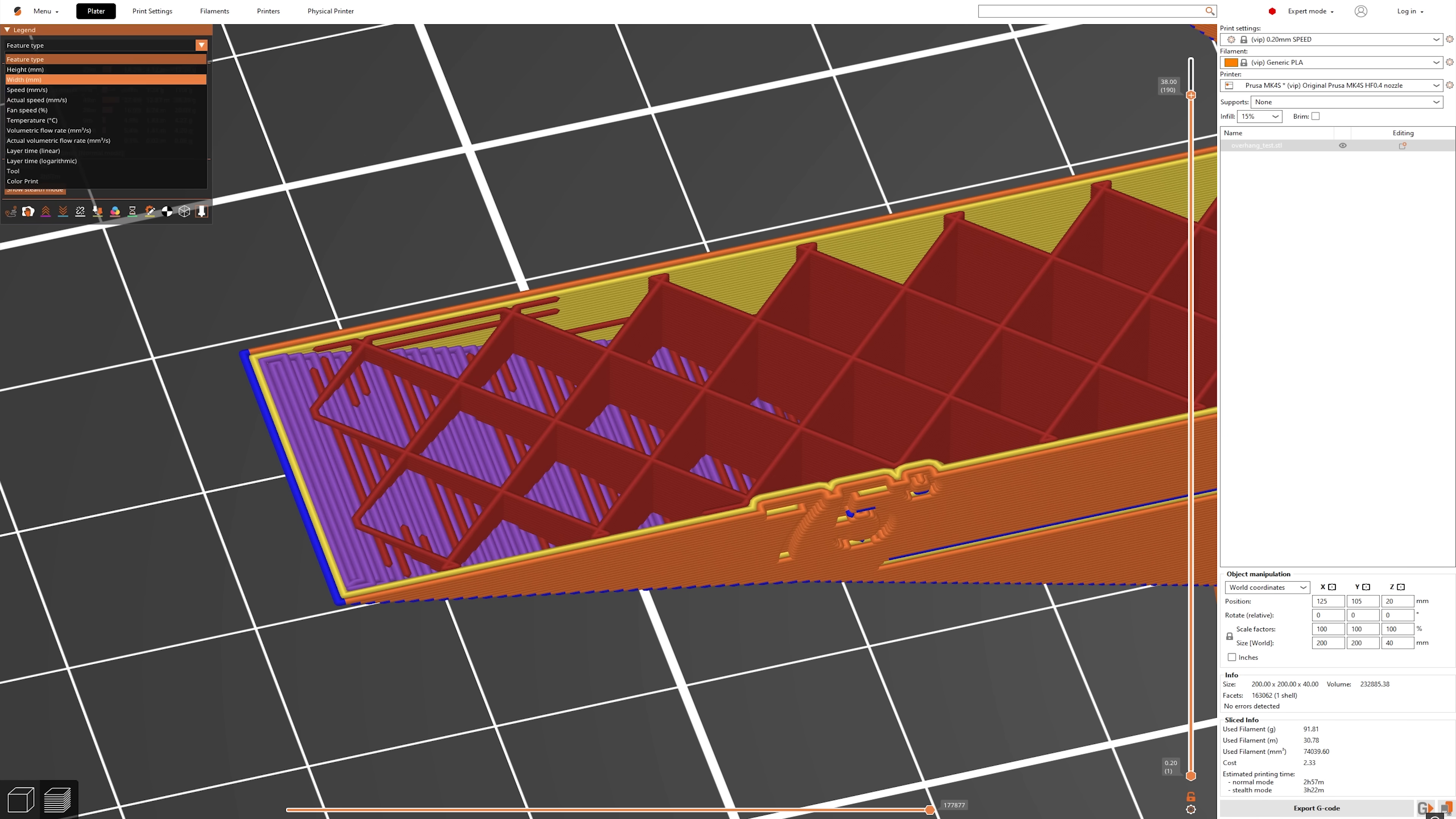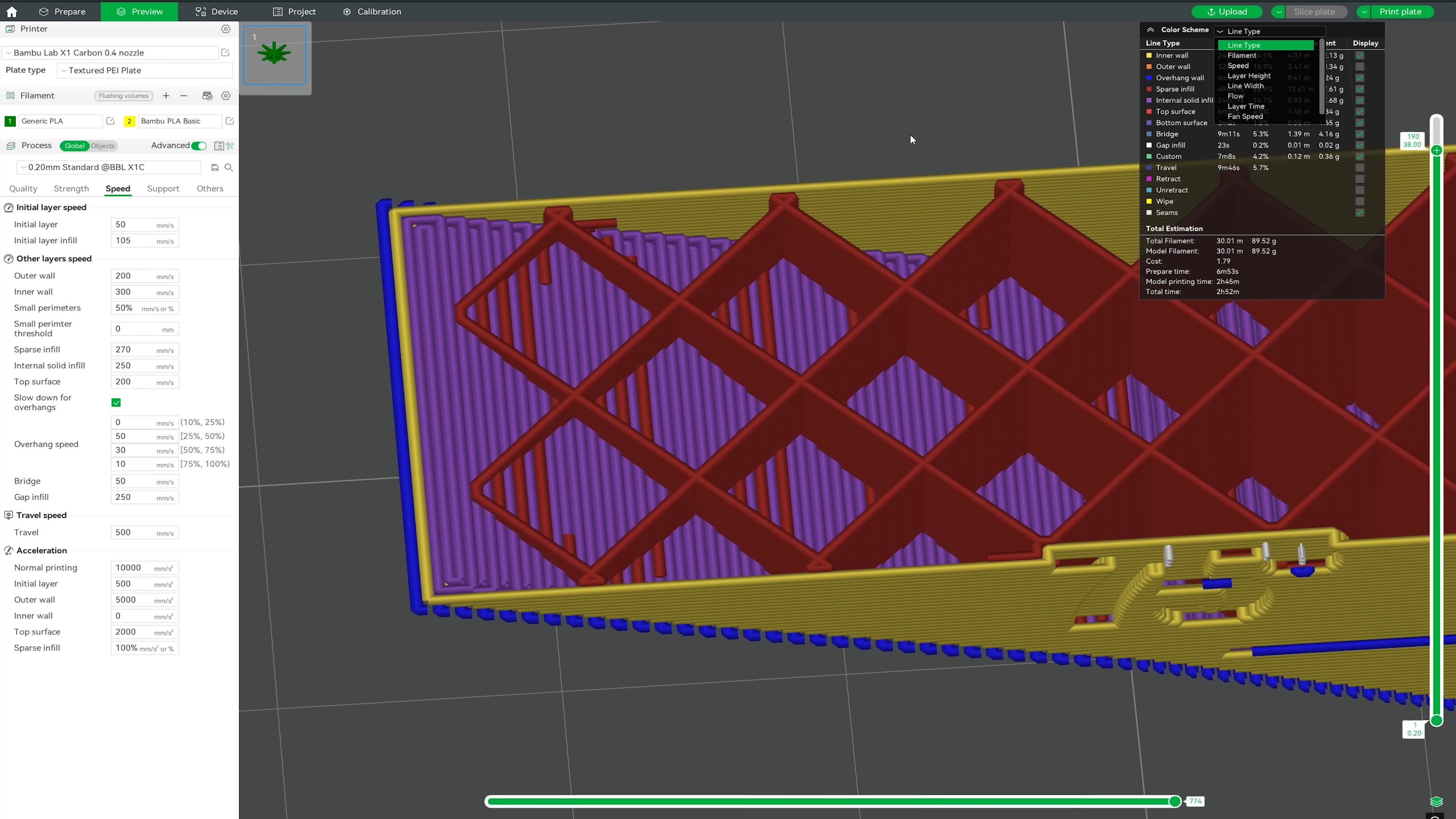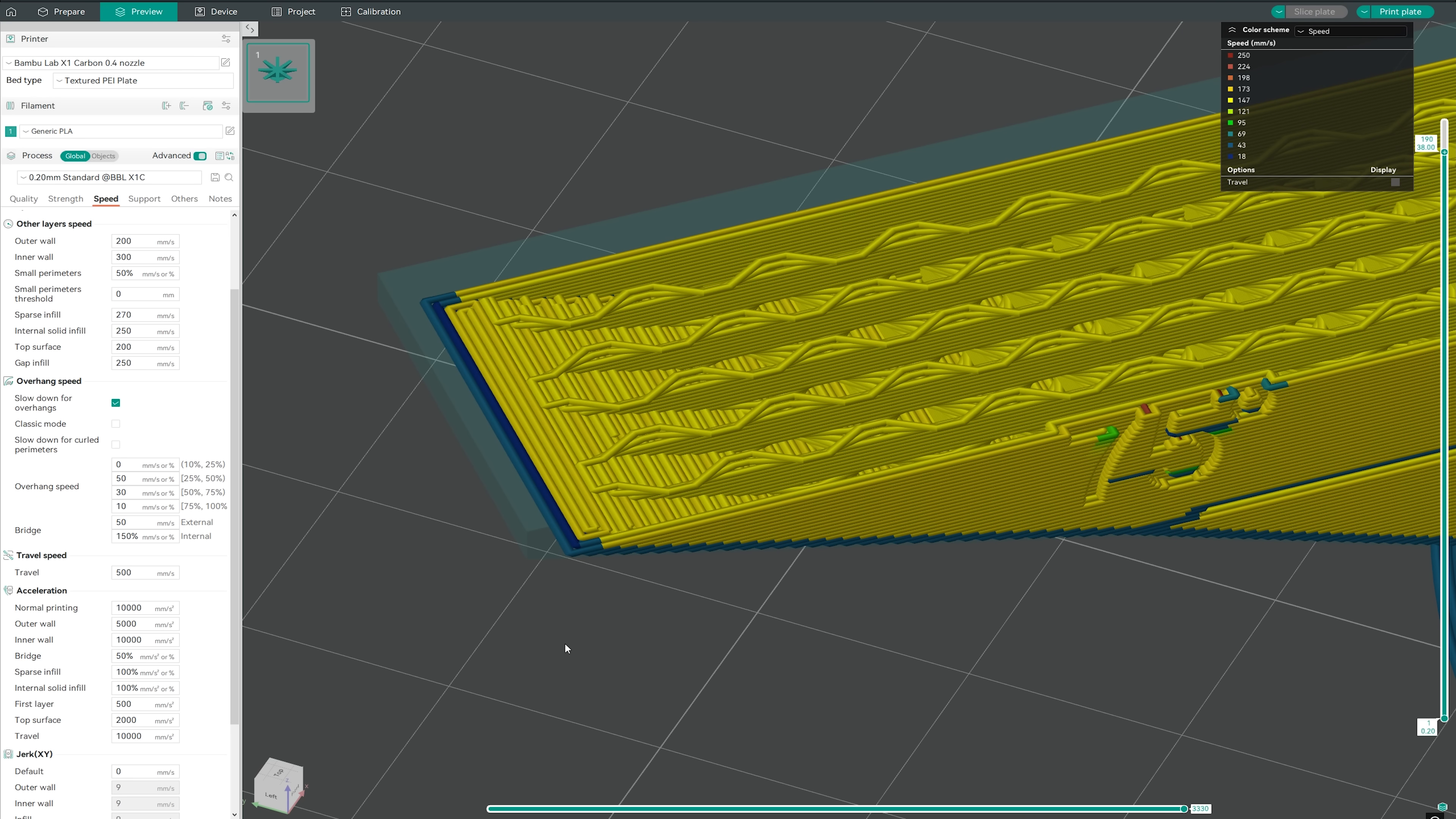However, if we look at the speed of all three, we can see some things change. In Prusa Slicer, the outside wall is printing at 10 millimeters a second. It shows 8.3, but it's actually 10. So that looks totally good. Over here in Bamboo, we can select speed. And the outside layer is actually printing faster than this inside layer. So we're printing the outside at about 50 and the inside at 10. 10 is correct, 50 is not. And we can see the exact same behavior in Orca Slicer. The outside is printing faster than the inside. What is going on?